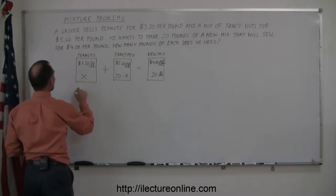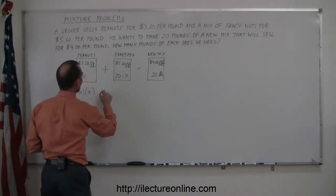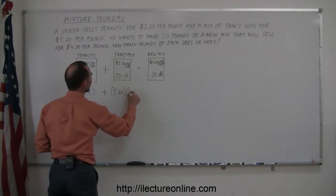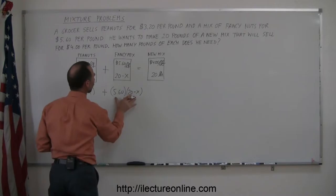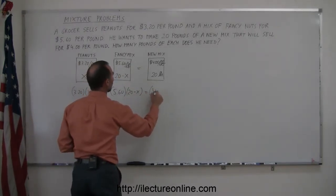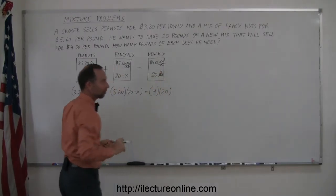So we can write that 320 times X, which is the total value of this mix, the mix of peanuts, plus 560 times 20 minus X, which is the total value of this mix, should add up to 4 times 20, which is the total value of this mix.